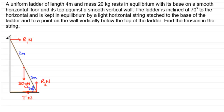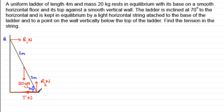Why is A the best point? Because T doesn't pass through A, so T will appear in the equation. Also, R1 passes through A, so it won't enter the equation — which is convenient since we don't need to know R1. Do experiment with this question: try taking moments about the top of the ladder or the midpoint. But for now we'll take moments about point A at the base.